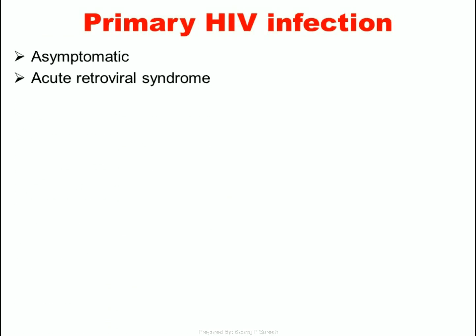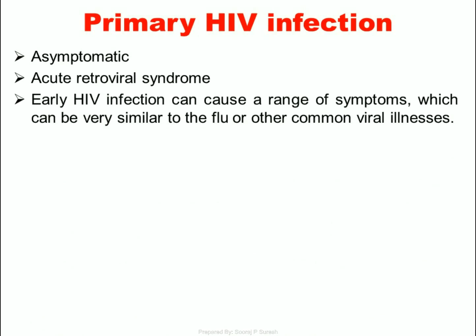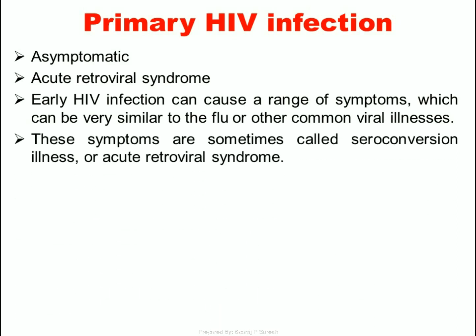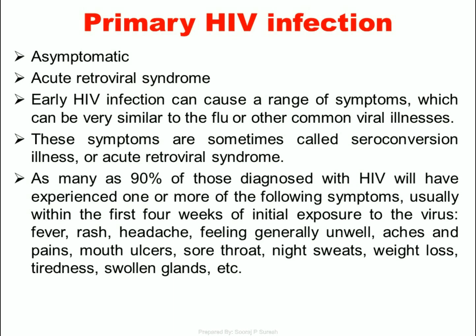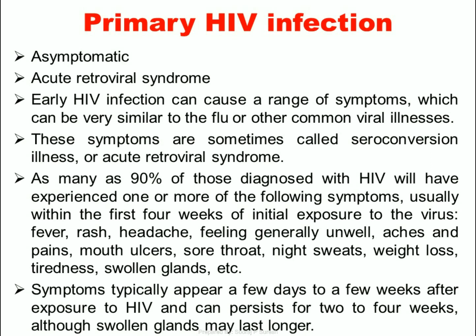Primary HIV Infection – Asymptomatic / Acute Retroviral Syndrome: Early HIV infection can cause a range of symptoms very similar to the flu or other common viral illnesses. These symptoms are sometimes called seroconversion illness or acute retroviral syndrome. As many as 90% of those diagnosed with HIV will have experienced one or more of the following symptoms, usually within the first four weeks of initial exposure: fever, rash, headache, feeling generally unwell, aches and pains, mouth ulcers, sore throat, night sweats, weight loss, tiredness, swollen glands, etc. Symptoms typically appear a few days to a few weeks after exposure and can persist for two to four weeks, although swollen glands may last longer.